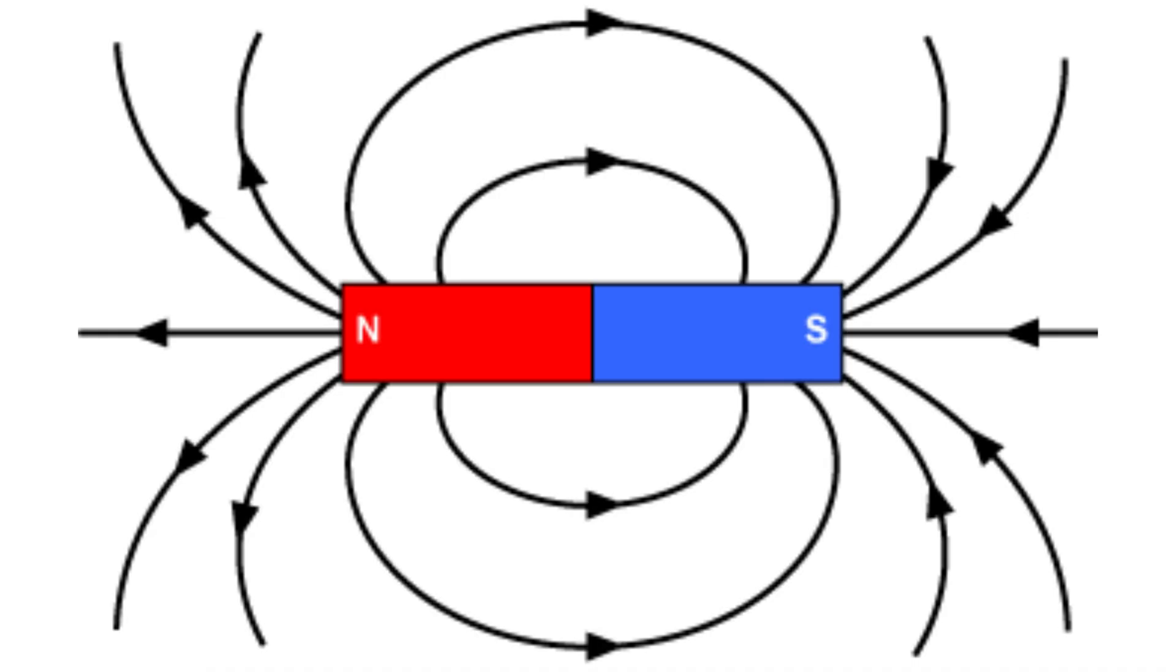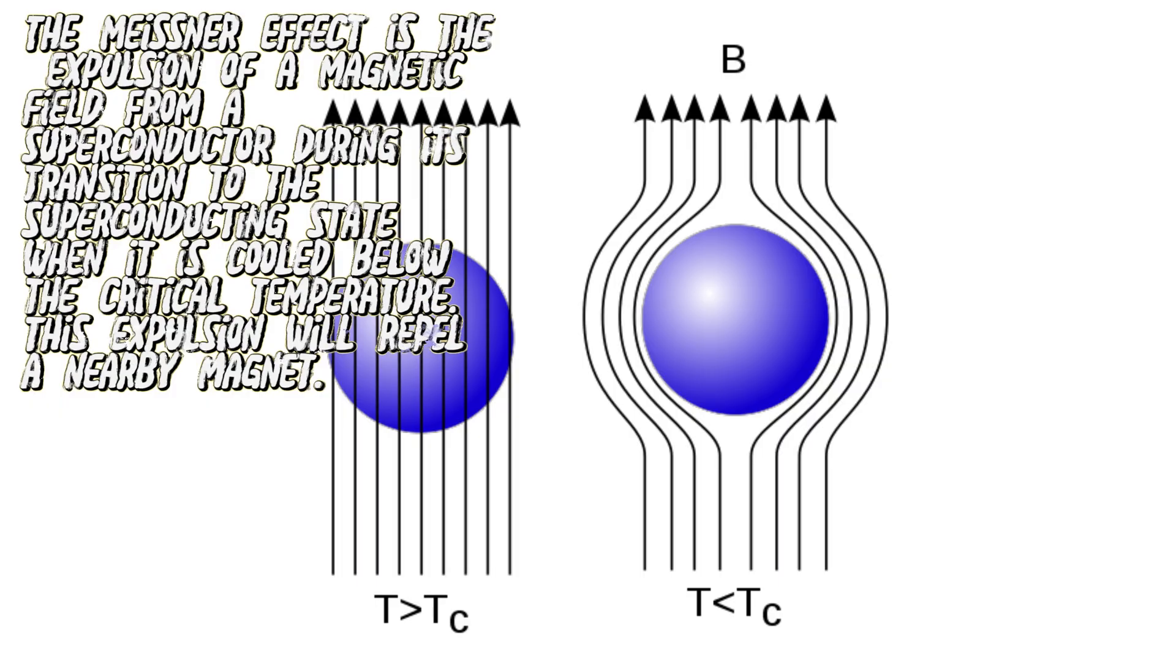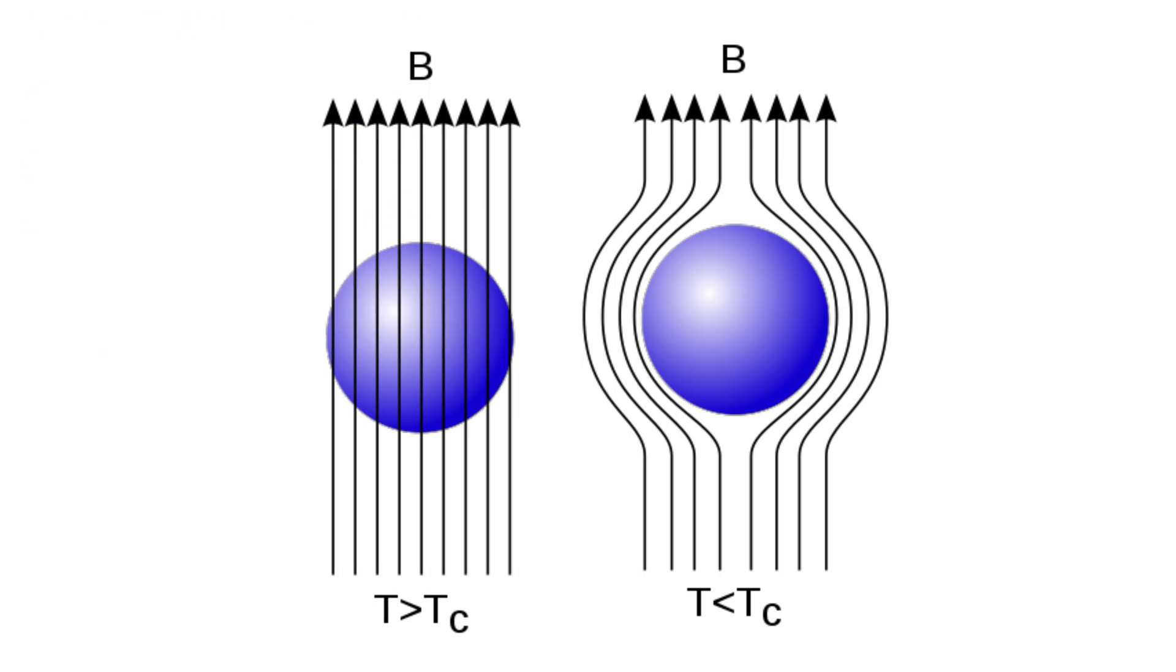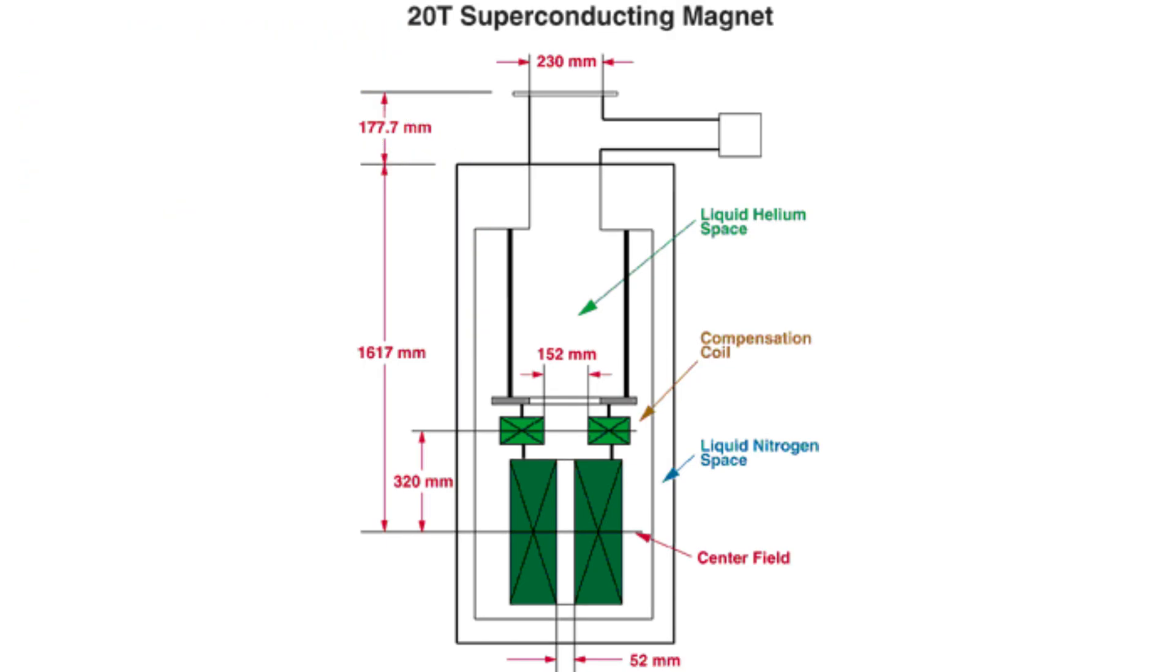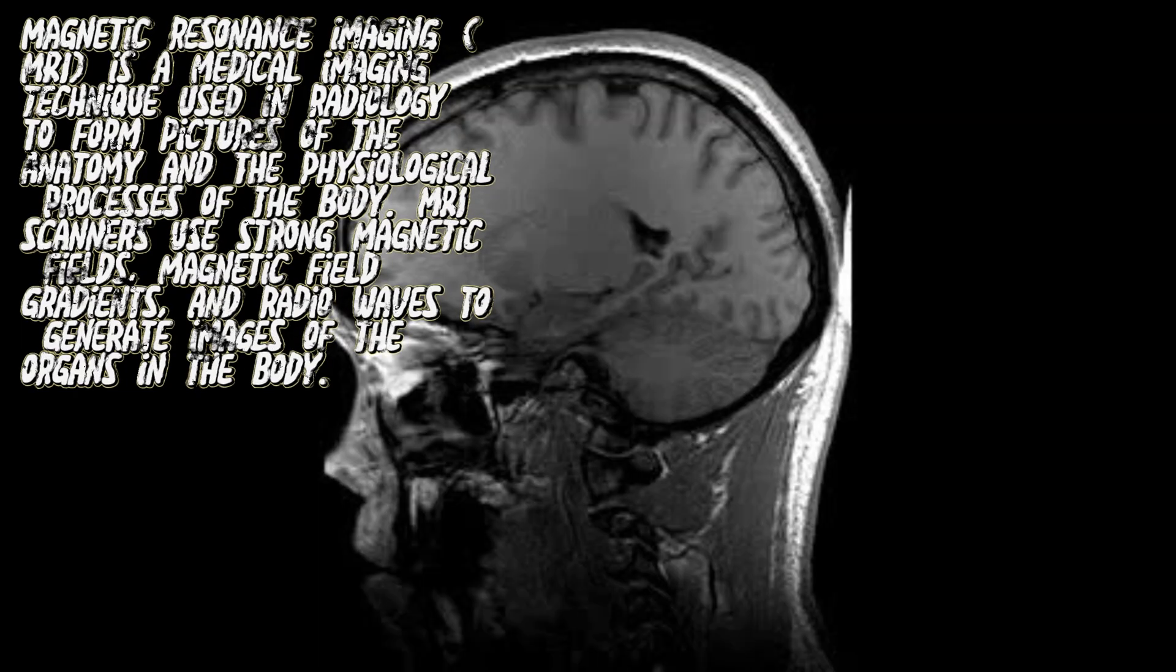A superconductor also excludes all magnetic fields from its interior, a phenomenon known as the Meissner effect or perfect diamagnetism. Superconducting magnets are used as electromagnets in magnetic resonance imaging machines.